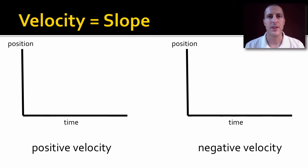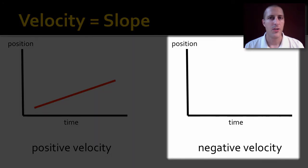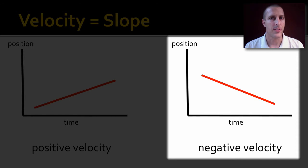Let's look at a couple of these. So we know that slope equals velocity. Here we have a position time graph, and we want to have positive velocity, so we draw a graph that has some sort of a positive slope. Over here we have a graph that we want negative velocity, so we need to have some sort of a negative slope.